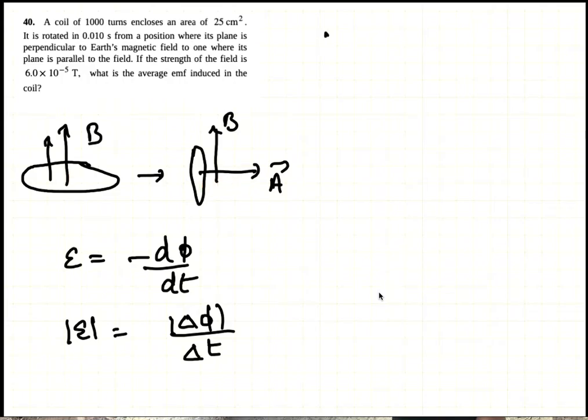So the induced EMF is the initial flux which was number of turns times B times area to zero.